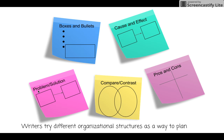The first one I have here — this blue one — is called boxes and bullets. Bullets are dots; you might make little dot points where you jot down some of your important information. Or you might simply make boxes like this one here to keep all your important information that you're writing about.